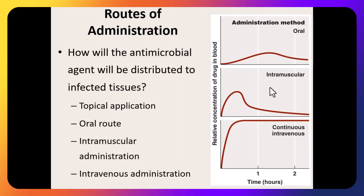For severe infections where you need faster, higher antibiotic levels in the bloodstream, the doctor may turn to intramuscular injection, which requires a doctor's office visit, or intravenous, which means the patient is admitted to the hospital — significantly more costly. So IV antibiotics are reserved for the most severe cases where oral or IM can't meet the need.